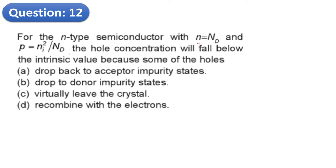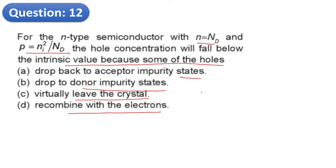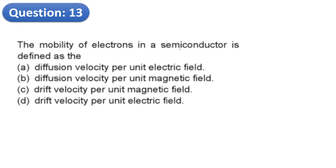Question 12: For n-type semiconductor with n equal to Nd and p equal to ni squared divided by Nd, the hole concentration falls below the intrinsic value. The reason is recombination — holes recombine with electrons, which is why the hole concentration decreases. The correct answer corresponds to the recombination option.